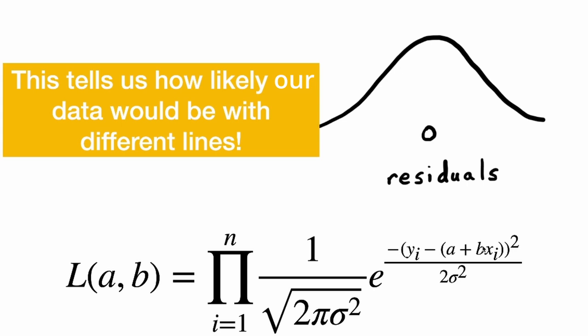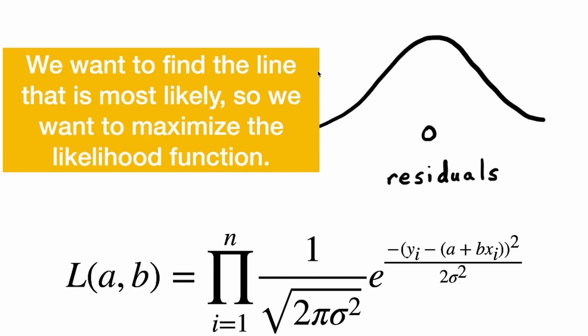So depending on what values of a and b we put in here, it tells us how likely those values would be given the data xi that we have, xi and yi. And we want to find the line that is most likely. So we want to maximize the likelihood function. We want to choose the values of a and b that make our data most likely.